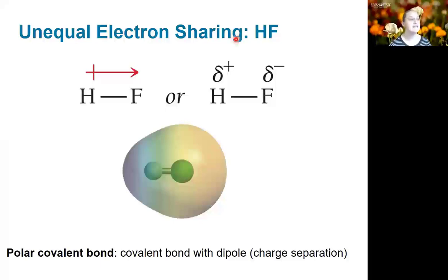This unequal sharing is represented in one of two ways. It can be represented with the dipole arrow, where we show the plus sign on the positive end—the side that's lacking electrons—and the arrow pointing towards the negative end, which is the side with the extra electrons. Or it can be represented with this delta plus delta minus notation. The delta plus just means we have a partial positive charge. It hasn't transferred the electron fully, but it's given up more of the electron than it's sharing back from fluorine. Fluorine has pulled more of that electron towards itself, which is why it ends up being negative. This is what we call a polar bond, or a polar covalent bond.